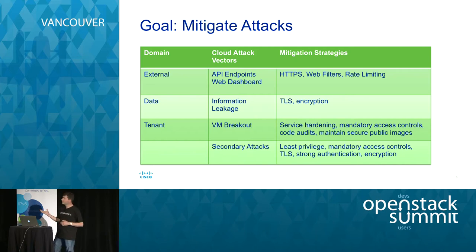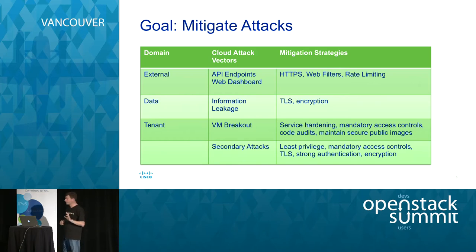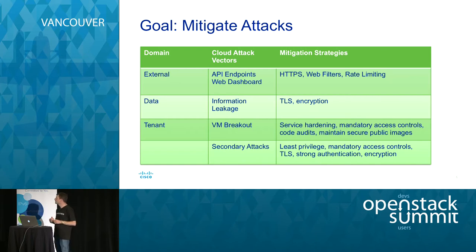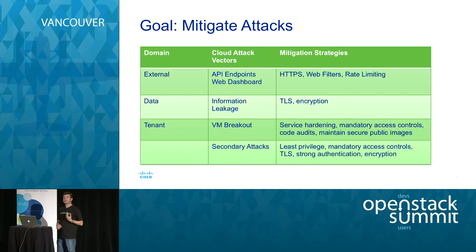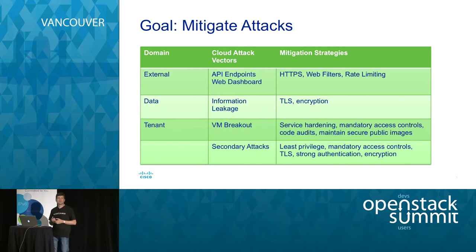When we look at the external domain — our API endpoints and web dashboard — we want to let the good guys in and keep the bad guys out. Techniques include using TLS and HTTPS to authorize and encrypt user access. We may also want web filters or rate limiting in front of those endpoints to prevent denial of service attacks. For the data domain, we're protecting against information leakage — using TLS and encryption so that even if somebody walks off with a hard drive, they haven't walked off with any data.